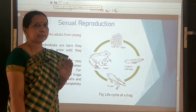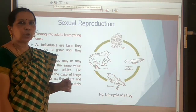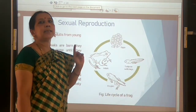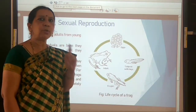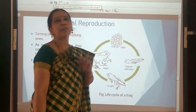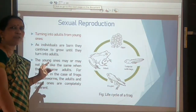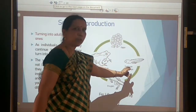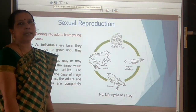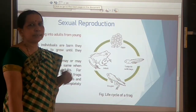In insects like butterflies and silk moths and in amphibians like frogs and toads, the young ones hatched from eggs do not resemble the adult directly. After undergoing drastic changes, they turn into adults — this is called indirect development. The tadpole is the larval form of the frog. The three important stages in the life cycle of a frog are egg, larva (tadpole), and adult.